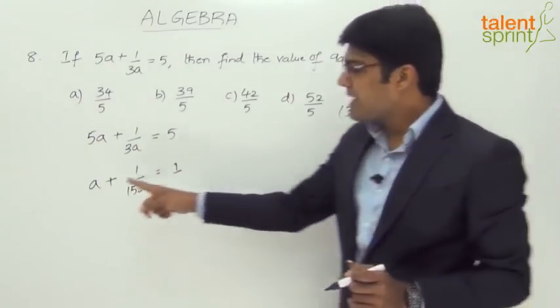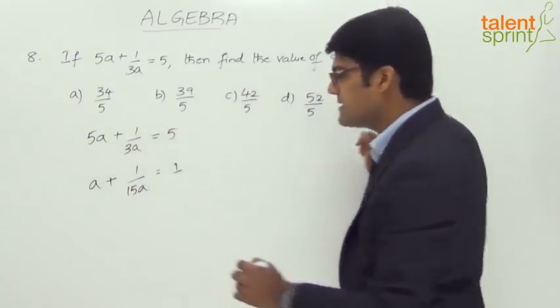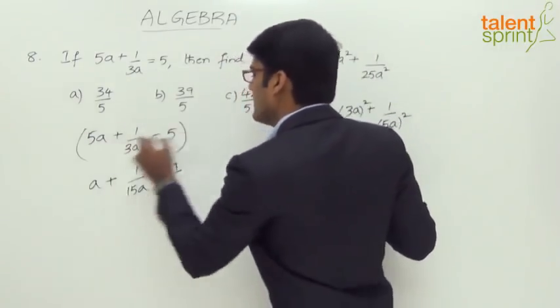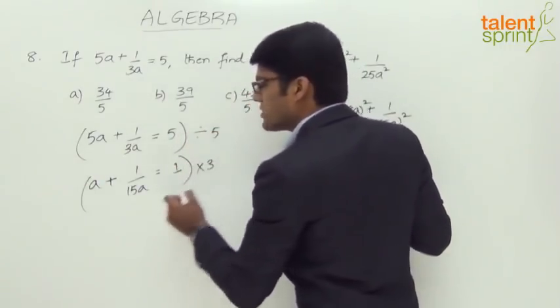Now we want 3a. So multiply the whole equation with 3 so that the first term becomes 3a. See what happens? Multiplying by 3. So this was division by 5. We have got this. Now we are multiplying it by 3.